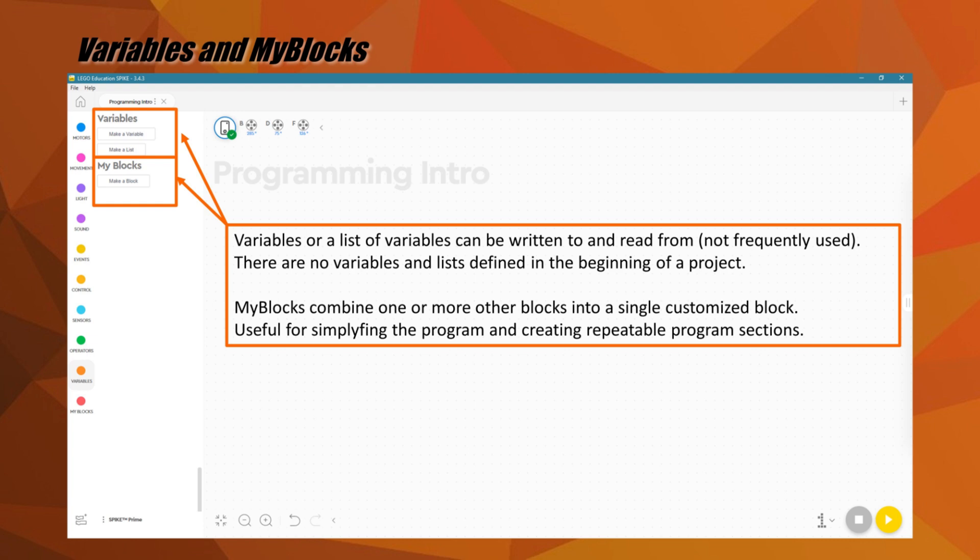The red category represents my blocks, which we use a lot in our programs. My blocks are a tool that combine one or more programming blocks into a single customized red block. They are useful for creating repeatable program sections that can be used in multiple places in a program to simplify it. Details on how to create my blocks will be part of an upcoming tutorial.